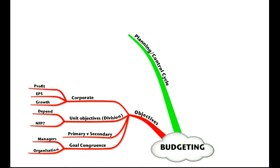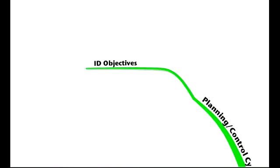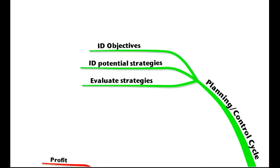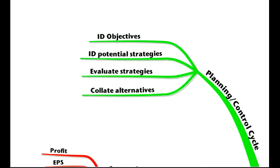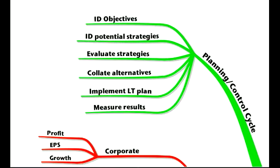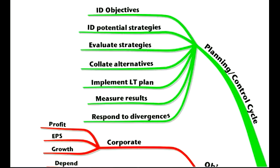The planning or control cycle. The first thing to do is identify your objectives as we've just discussed. Then we need to identify potential strategies to achieve those objectives. We'll evaluate those strategies and collate all the alternatives before implementing our long-term plan. We then want to measure the results and lastly respond to any divergences from the plan. Learn this control cycle because it could be a discussion question on the paper.